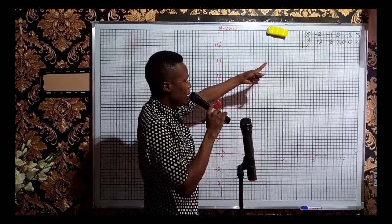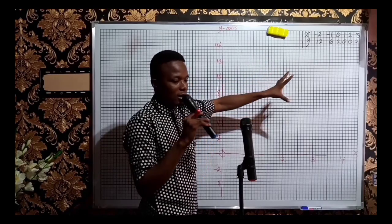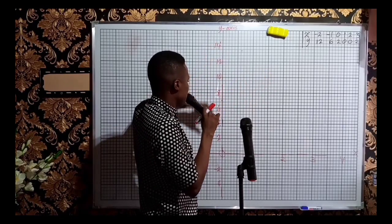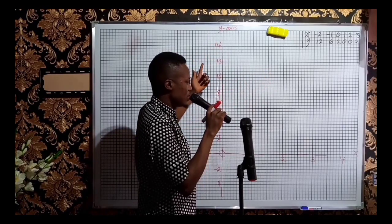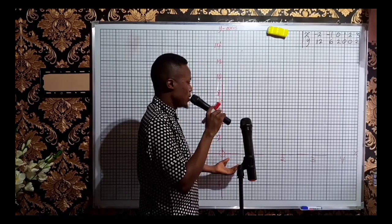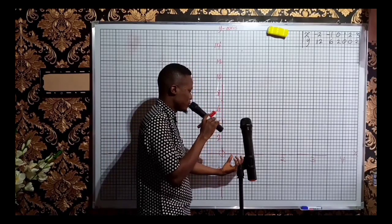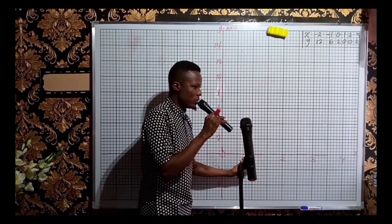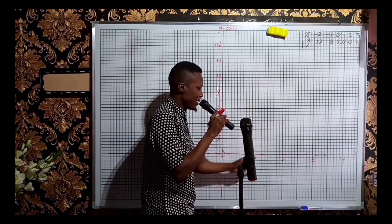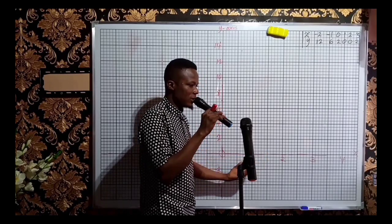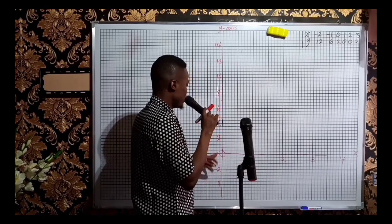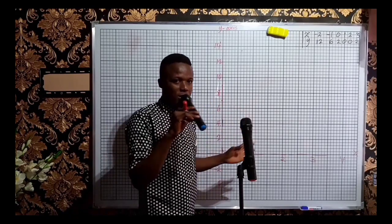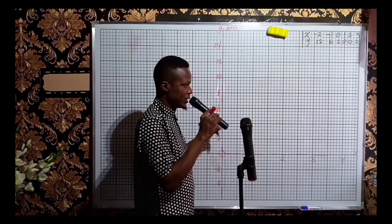Let us now proceed to plot the graph. When x is minus 2, y is 12 — so you locate minus 2 on the x-axis, move up to 12, and mark that point. When x is minus 1, y is 6 — locate minus 1 and mark at 6. When x is 0, y is 2 — mark that point.